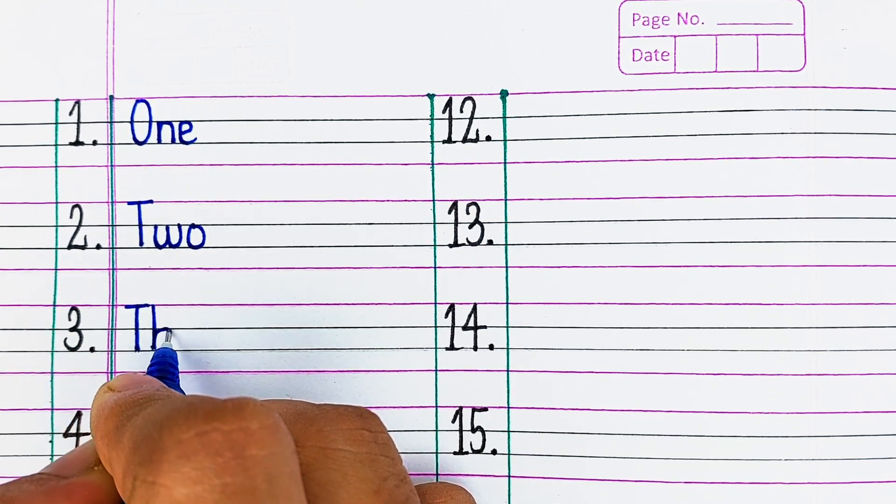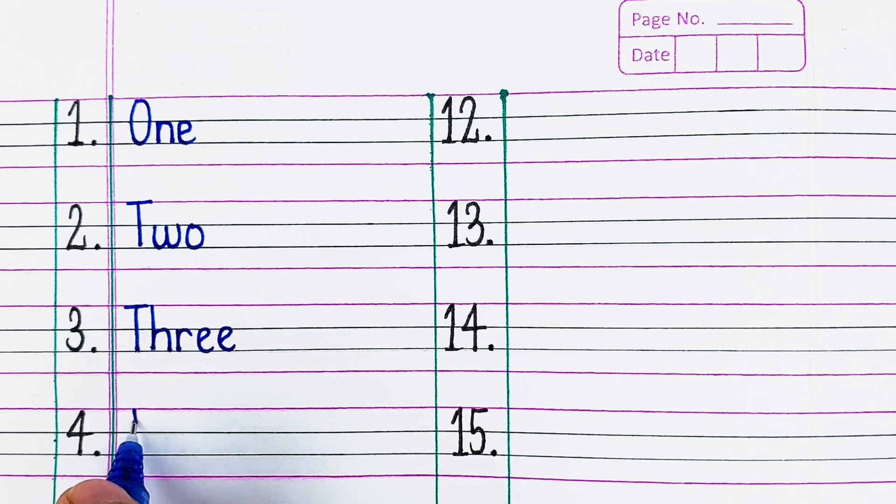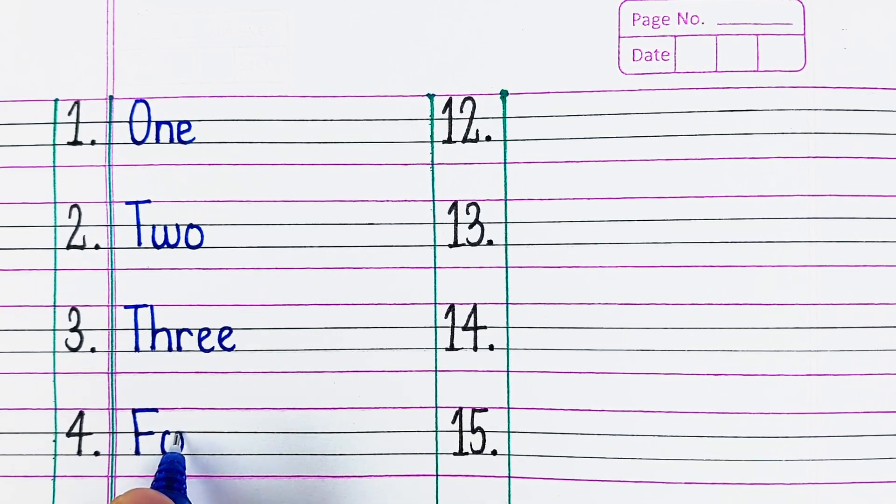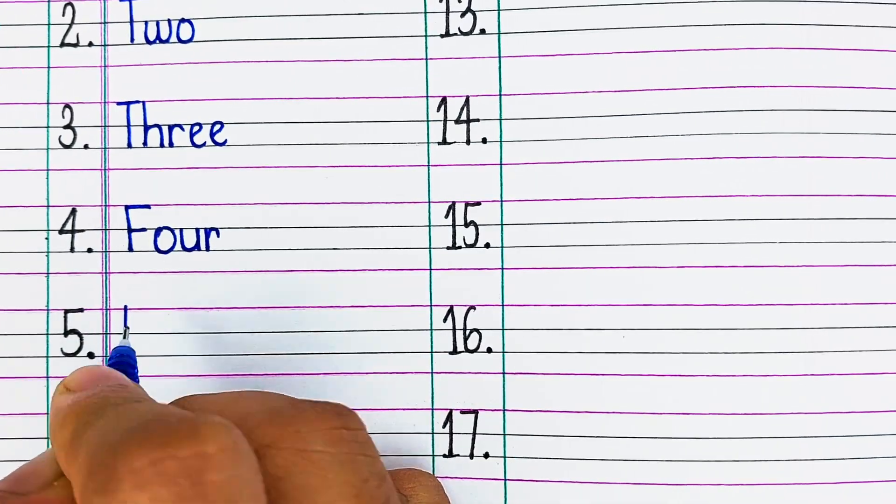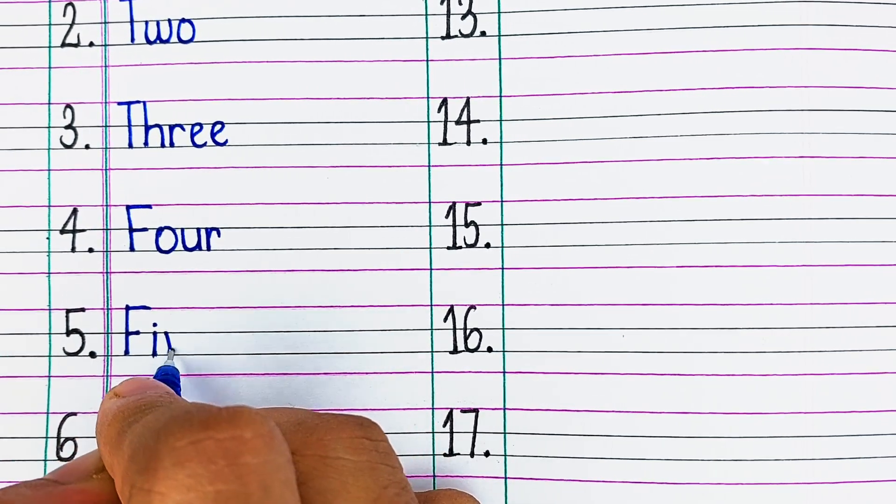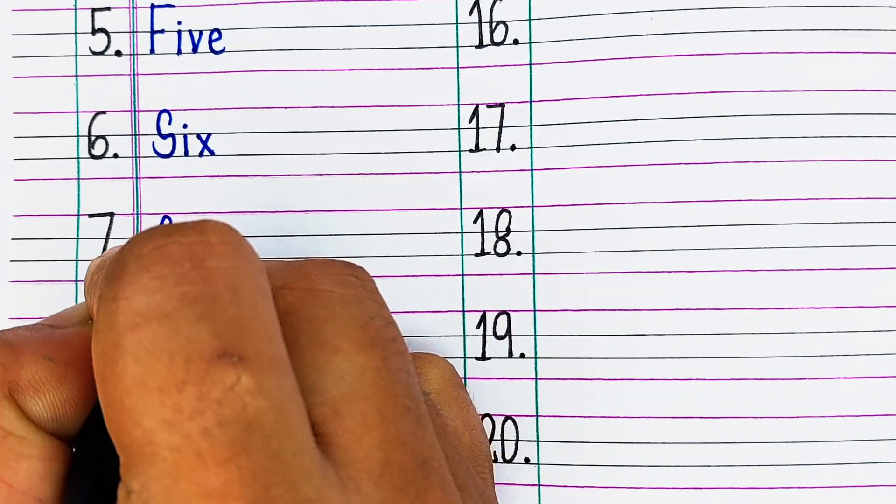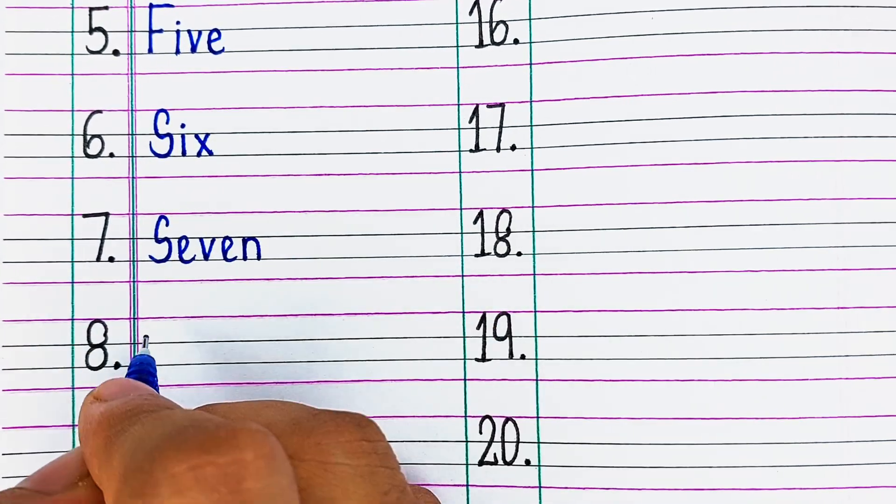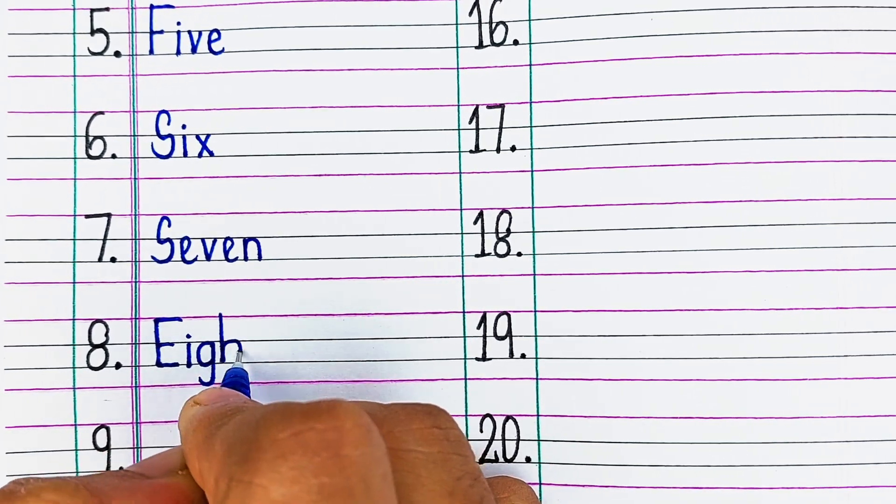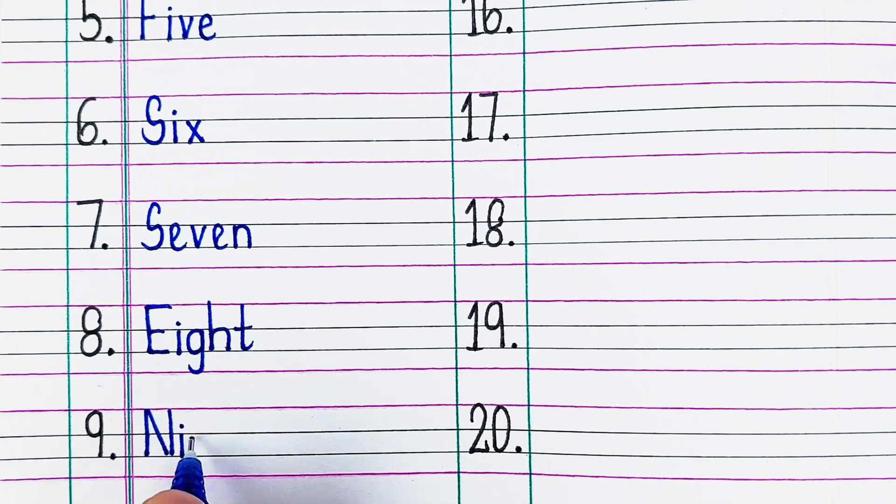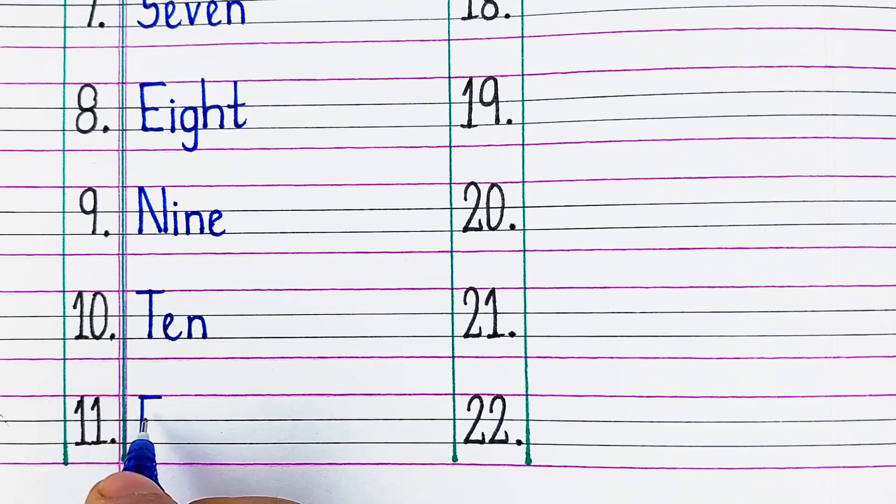O-N-E, 1. T-W-O, 2. T-H-R-E-E, 3. F-O-U-R, 4. F-I-V-E, 5. S-I-X, 6. Next is S-E-V-E-N, 7. Next, E-I-G-H-T, 8. Next, N-I-N-E, 9.